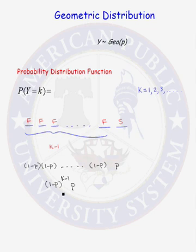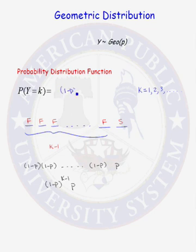So the probability of the first failure is 1 minus p, times the probability of the second failure is 1 minus p, times the probability of the k minus 1 failure, 1 minus p. Now we need the probability of our success, that is p. We can write this in shorter notation as 1 minus p raised to the k minus 1 power, times p. We've got k minus 1 failures, each with probability 1 minus p, and one success with probability p. So the probability that y equals k is (1 minus p)^(k-1) times p, for k equal to 1, 2, 3, dot dot dot.